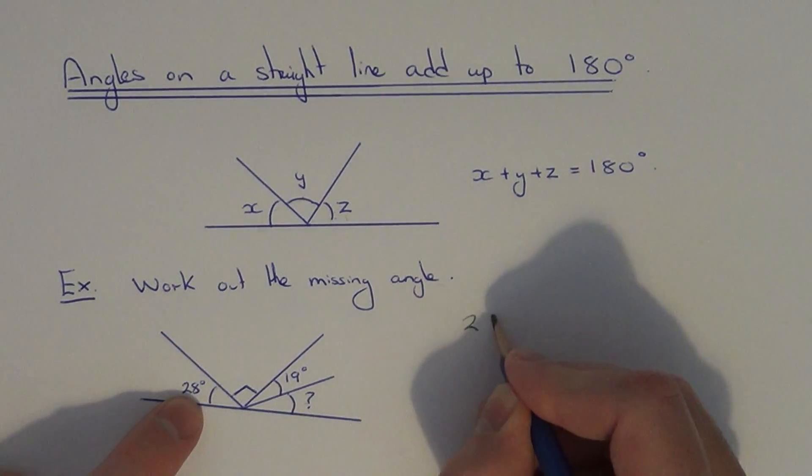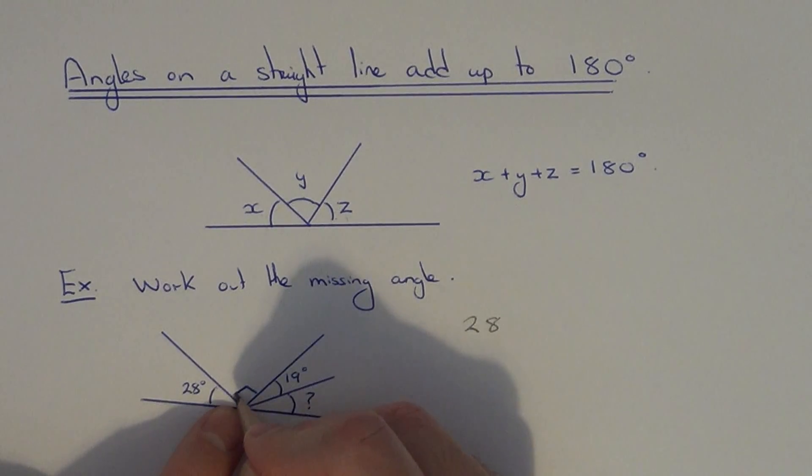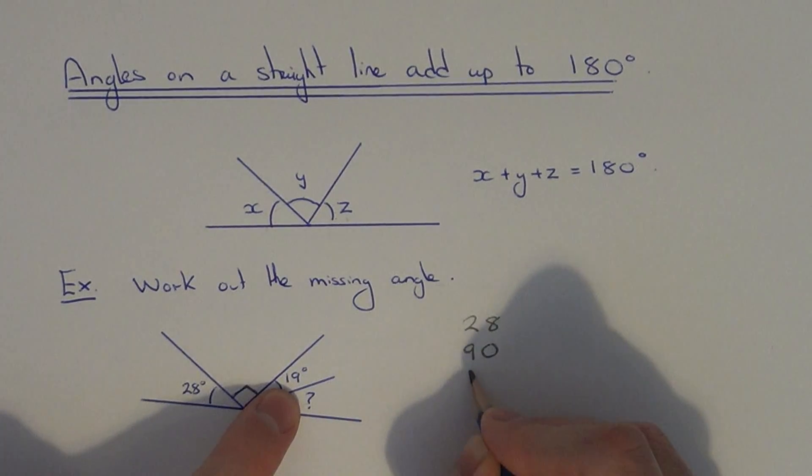We're going to add up 28, 90 (because we have a right angle here), and the third angle is 19 degrees.